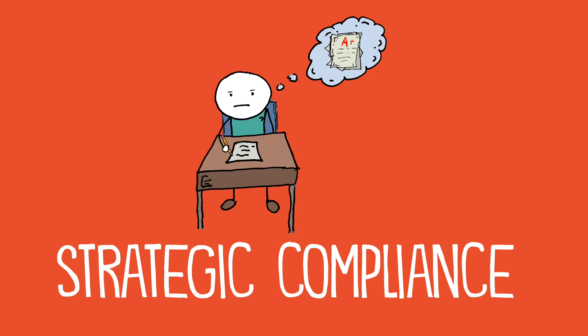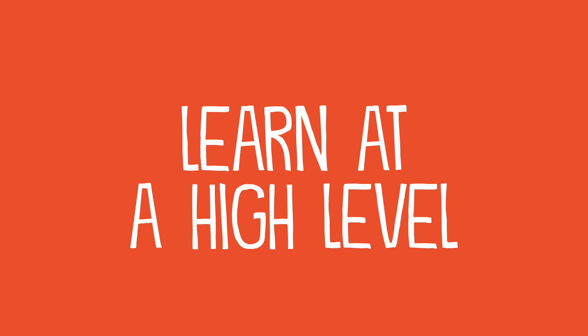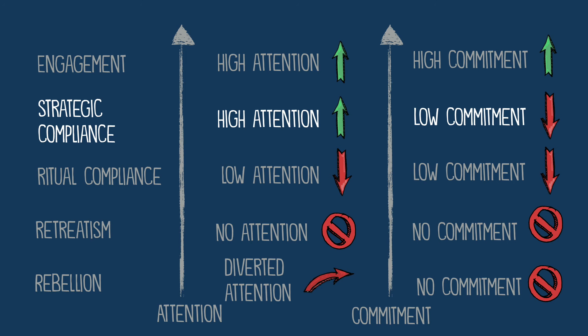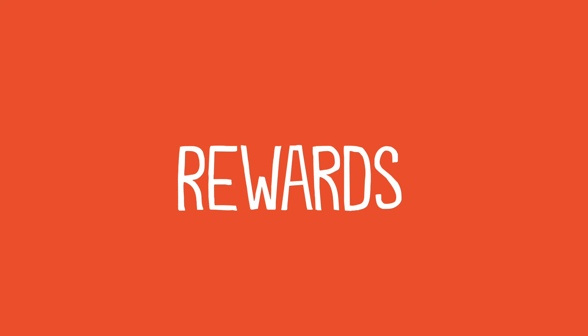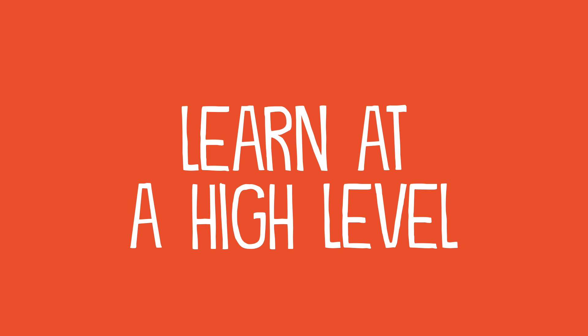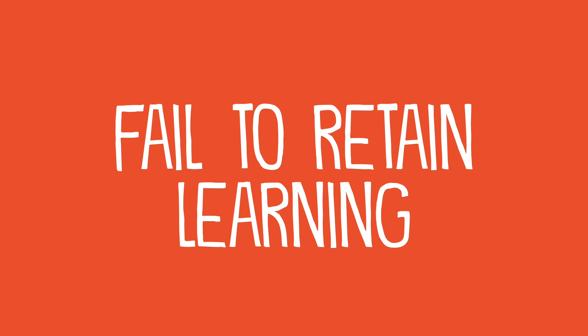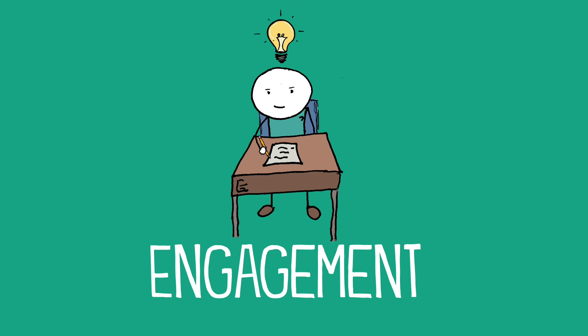Next is strategic compliance. Often this looks like engagement because the student might be performing at a high level, but it's not. The student has high attention on the task but low commitment to what he or she is doing. This is the student who is playing the game of school, focused on things like grades, parental approval, rewards, and class rank. But the learning isn't intrinsically rewarding, and as a result, this student will often learn at a high level but fails to retain the learning over time or transfer it to a new context.